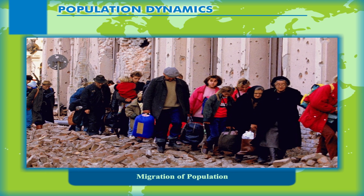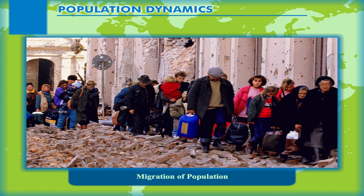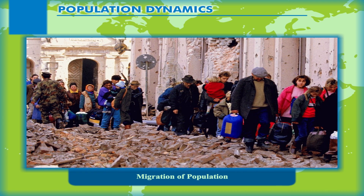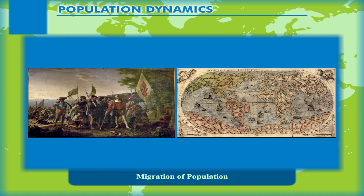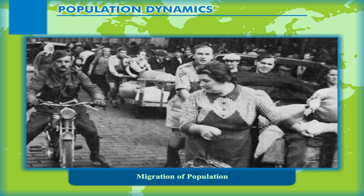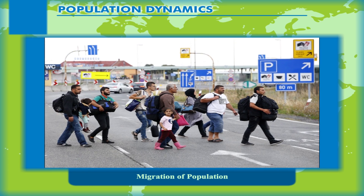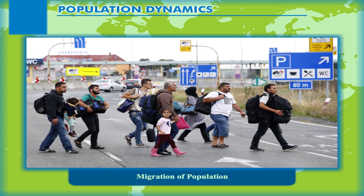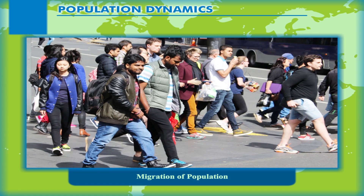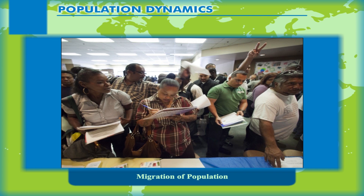Migration of Population. Migration is the movement of people in and out of an area, and it is another way by which population size changes. After the discovery of the Americas in the 16th century, there was a wave of emigration from European countries to settle in America. Thus, countries like the United States of America and Australia have gained in numbers by immigration. Sudan is an example of a country that has experienced a loss in population numbers due to out-migration or emigration. The general trend of international migration is from the less developed nations to the more developed nations in search of better employment opportunities.